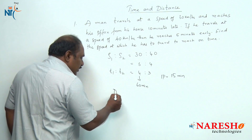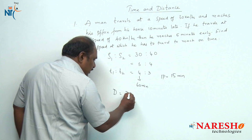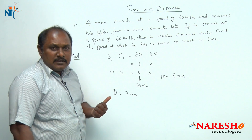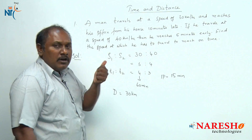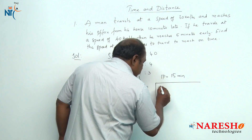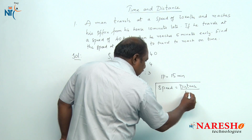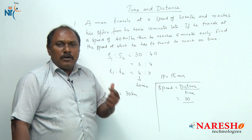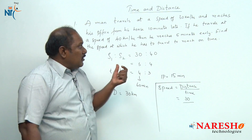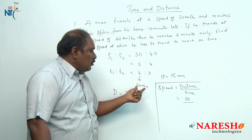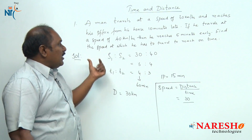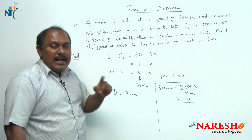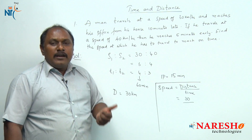Travelling at a speed of 30 kilometers per hour, he takes 1 hour to reach his office. That means the distance from his house to office is 30 kilometers. But in this particular question, we are not asked to find the distance — we are asked to find the speed at which he has to travel to reach on time. Travelling at 30 kilometers per hour he took 60 minutes, and in the question it is given that travelling at 30 kilometers per hour he is late by 10 minutes. That means to reach his office on time, he should take only 50 minutes.